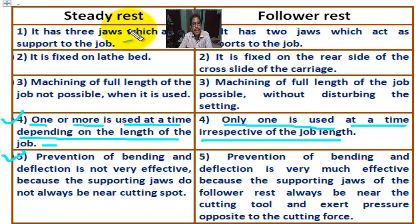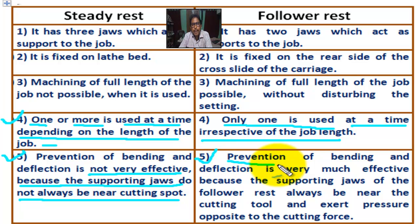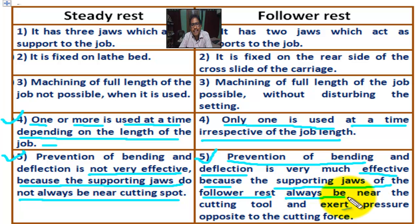Number five for steady rest: prevention of bending and deflection is not very effective, because the supporting jaws do not always remain near the cutting spot. Number five for follower rest: prevention of bending and deflection is very much effective, because the supporting jaws of the follower rest are always near the cutting tool and exert pressure opposite to the cutting force.